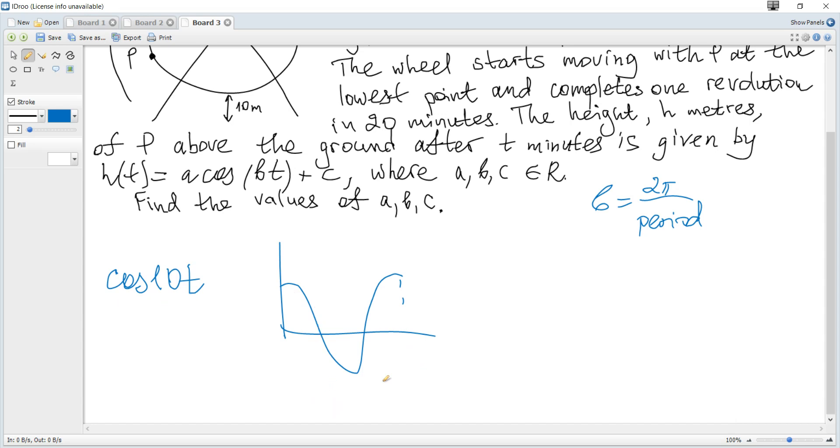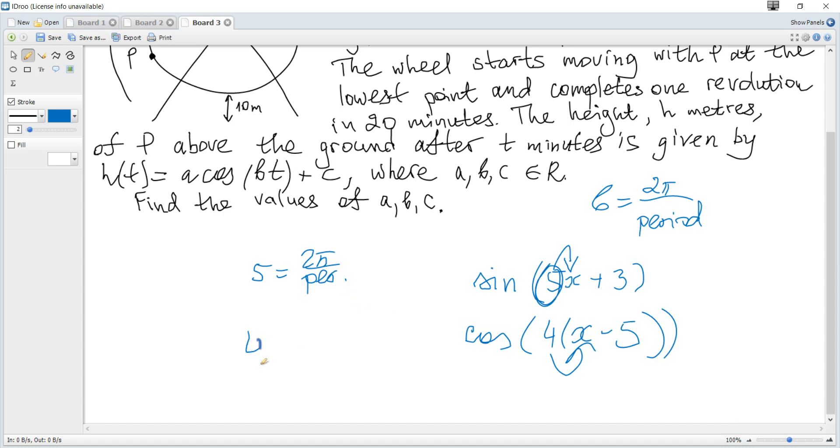This is always true. For example, in sin(5x + 3) or cos(4x - 5), the coefficient multiplied by x (ignoring plus/minus within parentheses) gives you 2π/period. Therefore, B = 2π/period. The period is 20 minutes here, so B = 2π/20 = π/10.